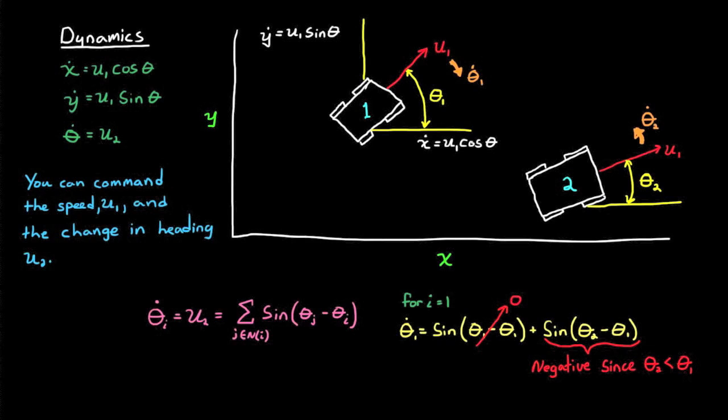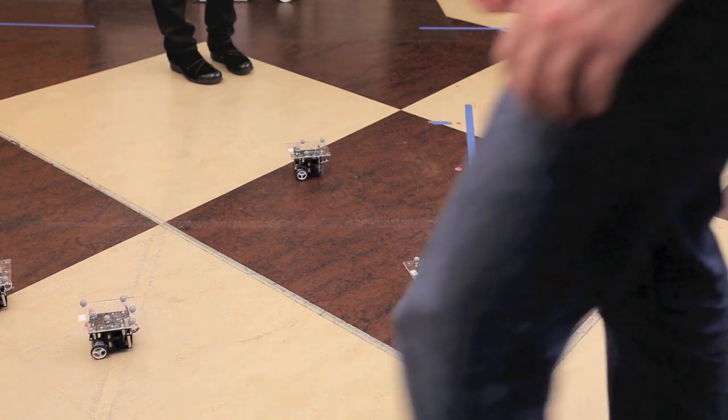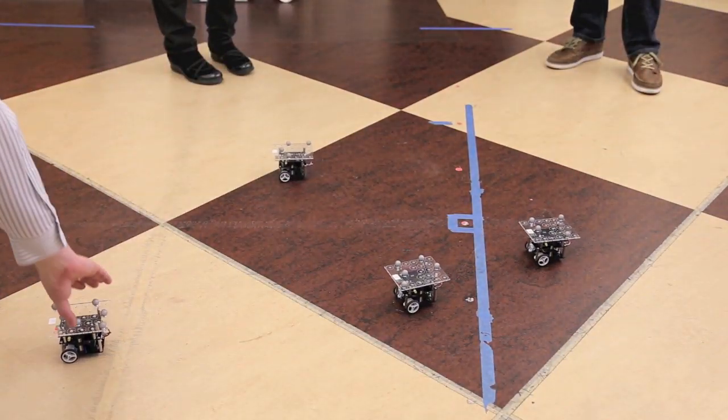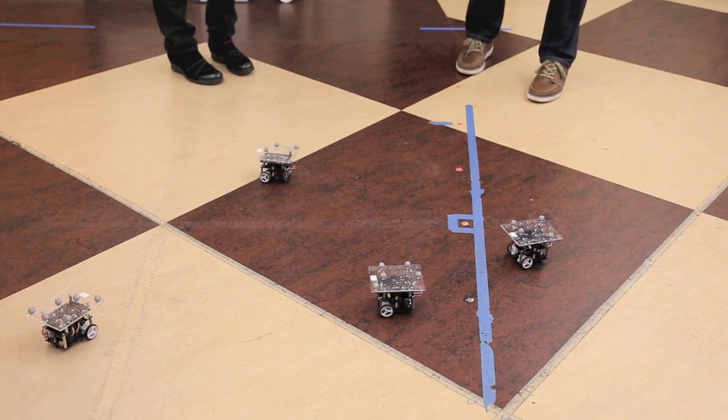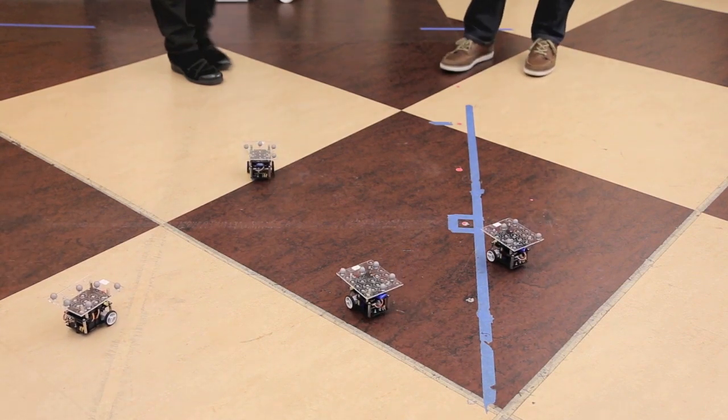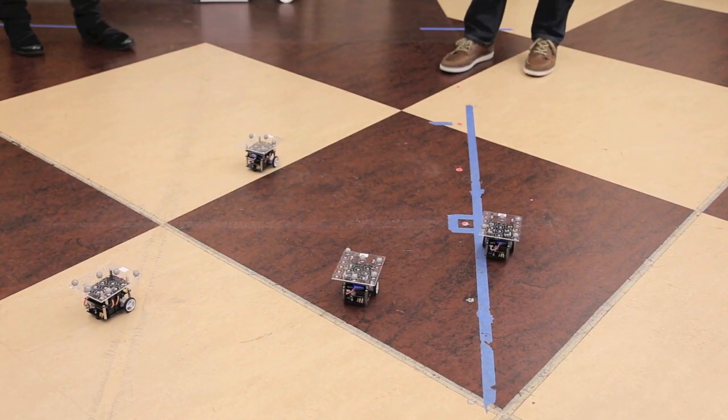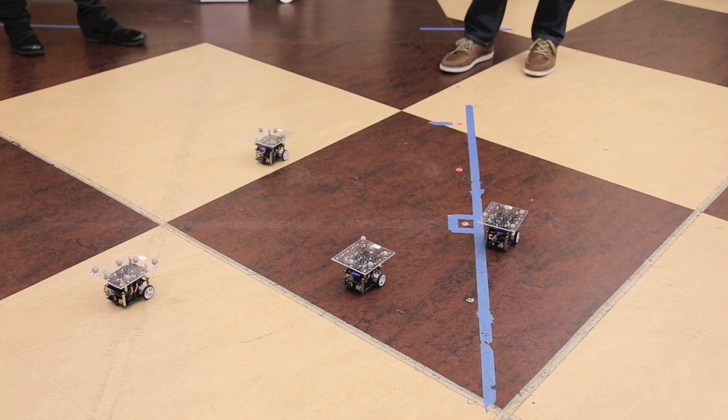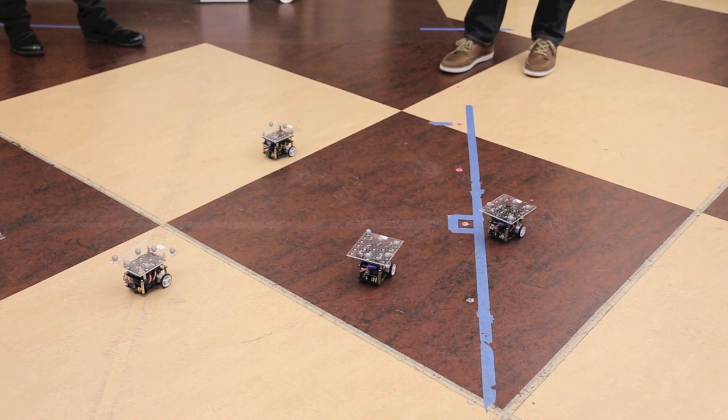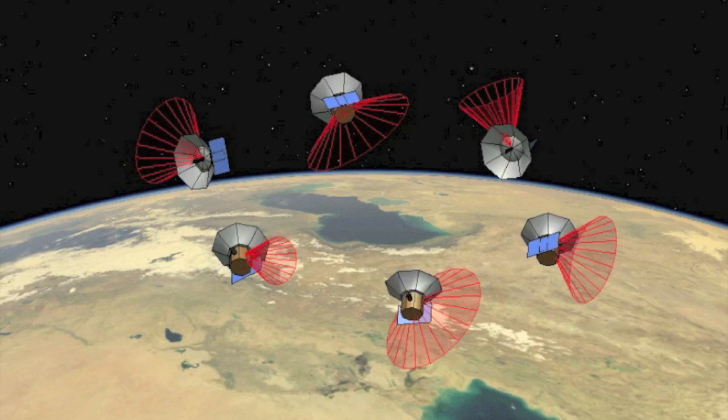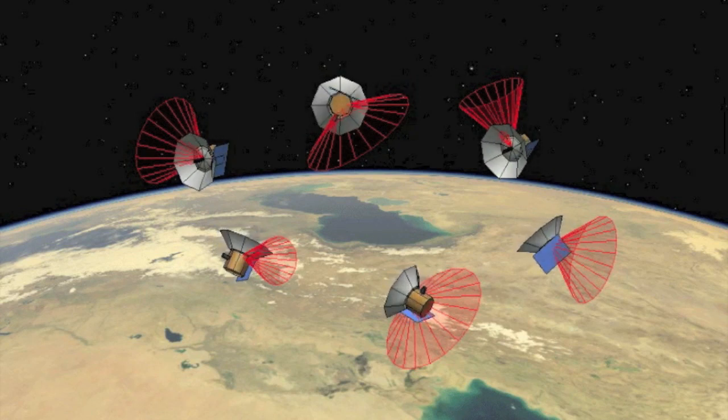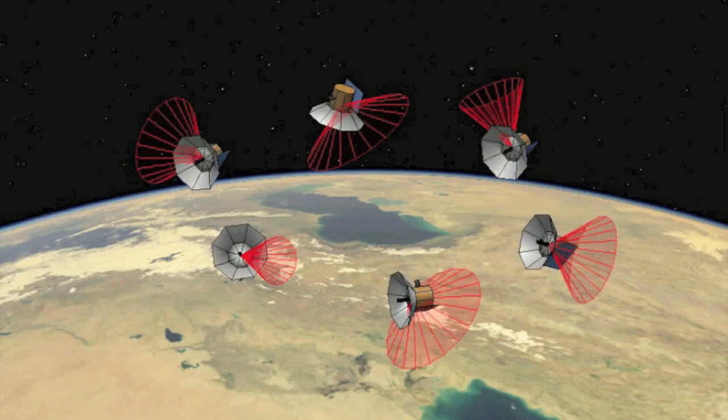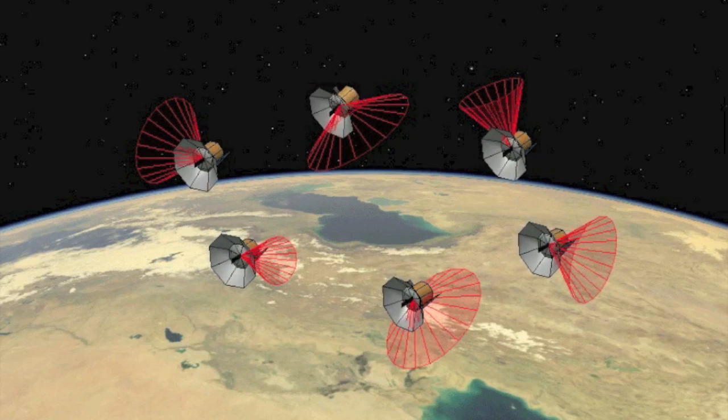This is called the Kuramoto model, and over time the bearings of all the robots will converge. With this model there is also the idea of a grounded node. Here there is a single leader unicycle, and when Eric sets it on a new path, the rest of the swarm eventually converges to that exact same bearing. These bearing consensus algorithms could also be applied to other applications. Here multiple spacecraft are synchronizing to the same attitude based on a single grounded node.